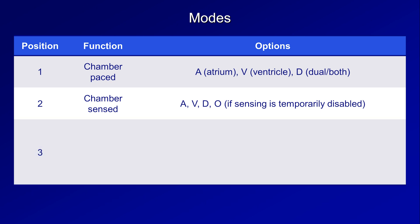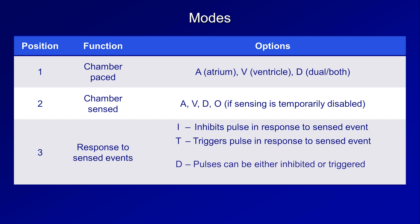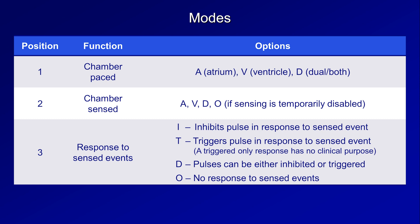The third position is the tricky one — it describes what the pacemaker's response is to sensed events. Options include I for inhibiting a pacemaking pulse in response to a sensed event, T for triggering a pulse in response to a sensed event, D for when pulses can either be inhibited or triggered, and O if there is no response to sensed events or if sensing is disabled. Notably, T — a triggered-only response without any inhibition — has no clinical purpose and should never be used in practice.